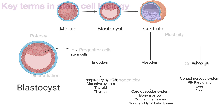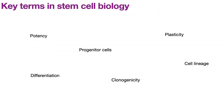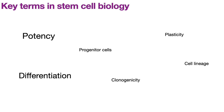Before moving on to the different types of stem cells, I would like to discuss a few key terms commonly used in stem cell biology. The first is potency — the ability of a cell to give rise to different types of cells, ranging from one to many different cell types. Next is differentiation, which is the ability of a cell to become specialized and perform a specific function, carried out by changing gene expression and protein expression.